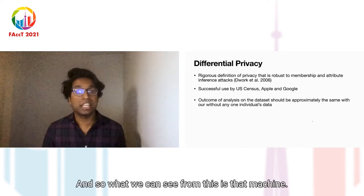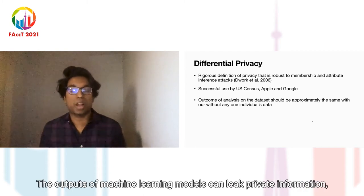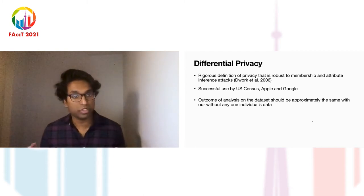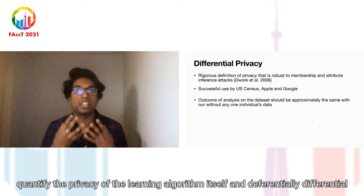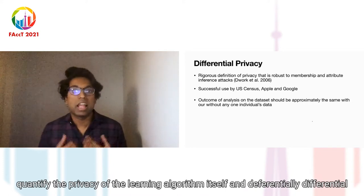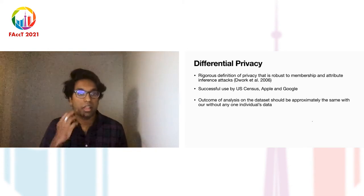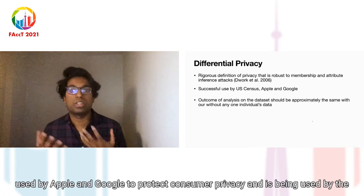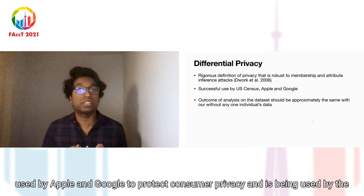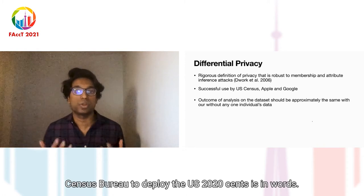The outputs of machine learning models can leak private information, and we needed a definition of privacy that allowed us to rigorously quantify the privacy of the learning algorithm itself. Differential privacy provides us with this framework. Currently, it has seen successful use by Apple and Google to protect consumer privacy and is being used by the U.S. Census Bureau to deploy the 2020 Census.